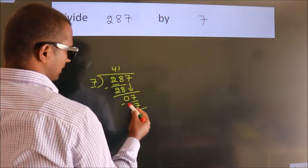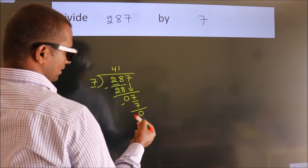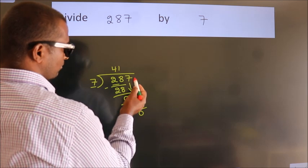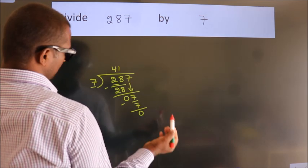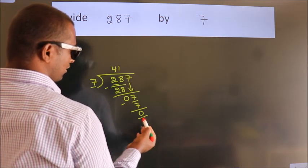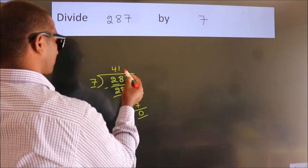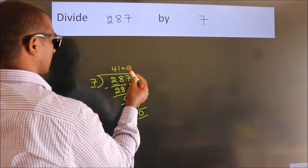Now we subtract. We get 0. After this, no more numbers to bring down. And we got remainder 0. So this is our quotient.